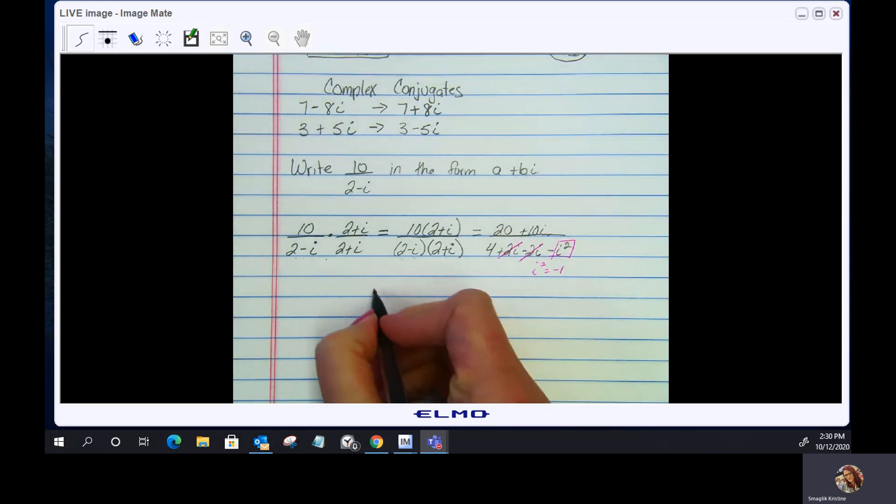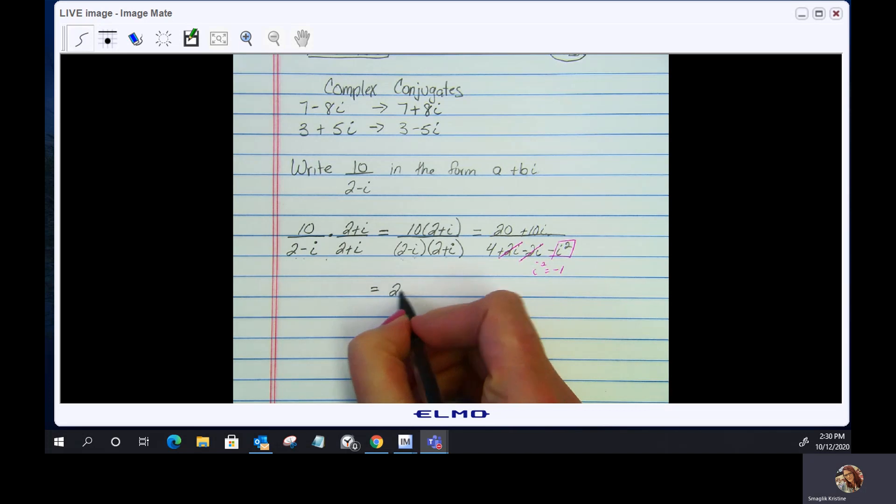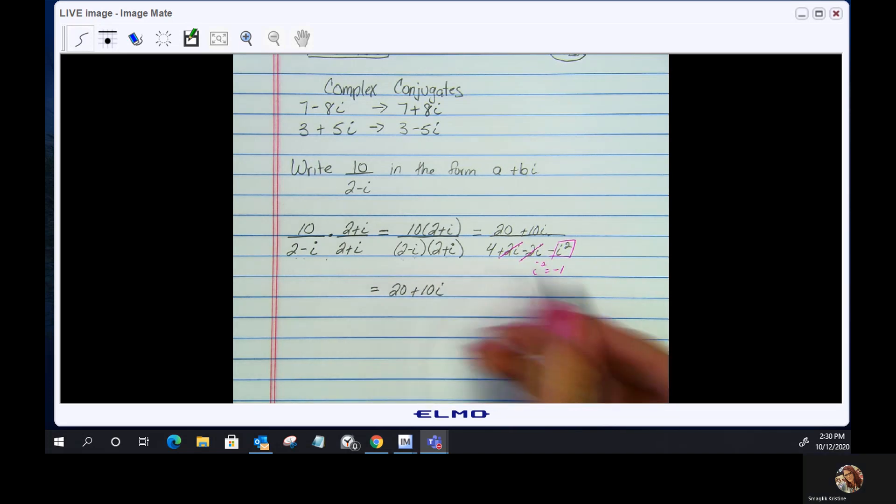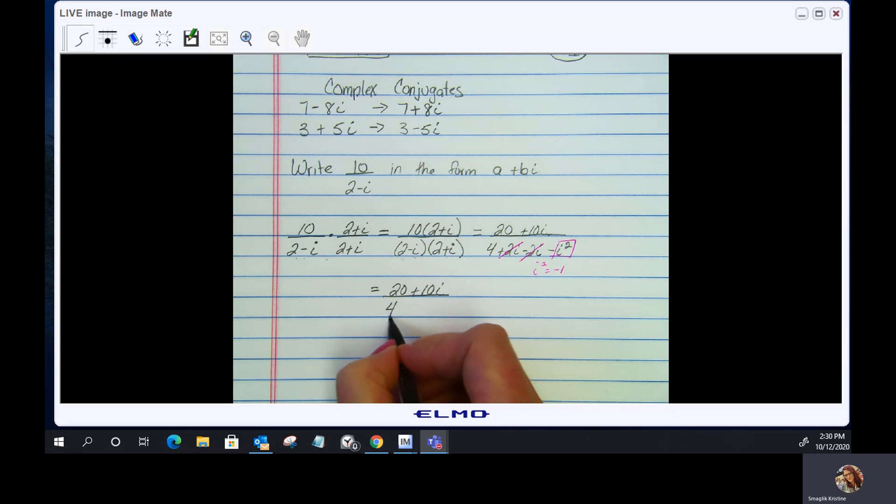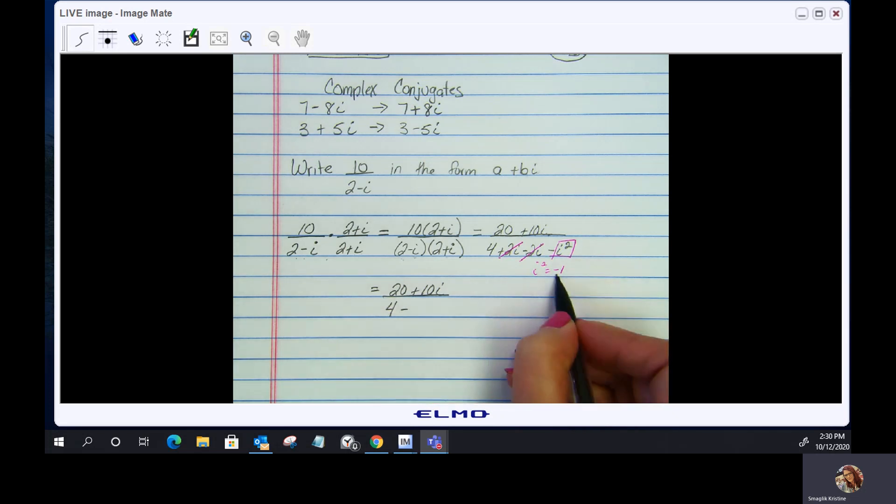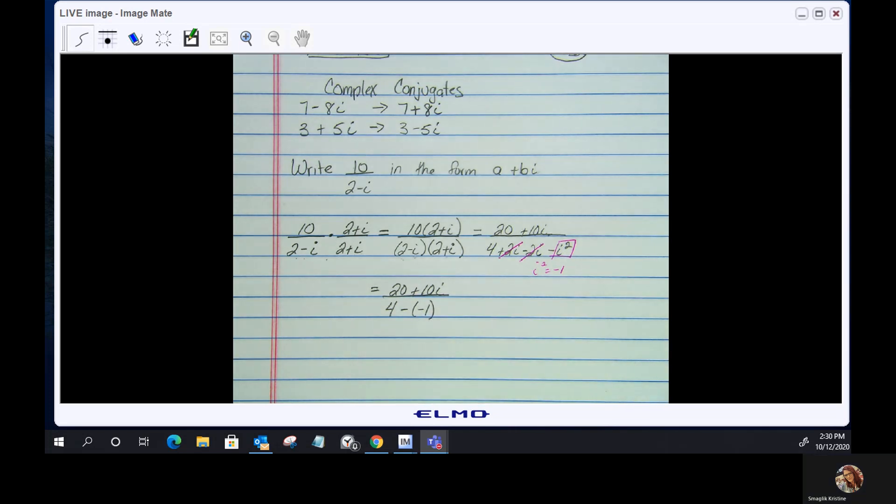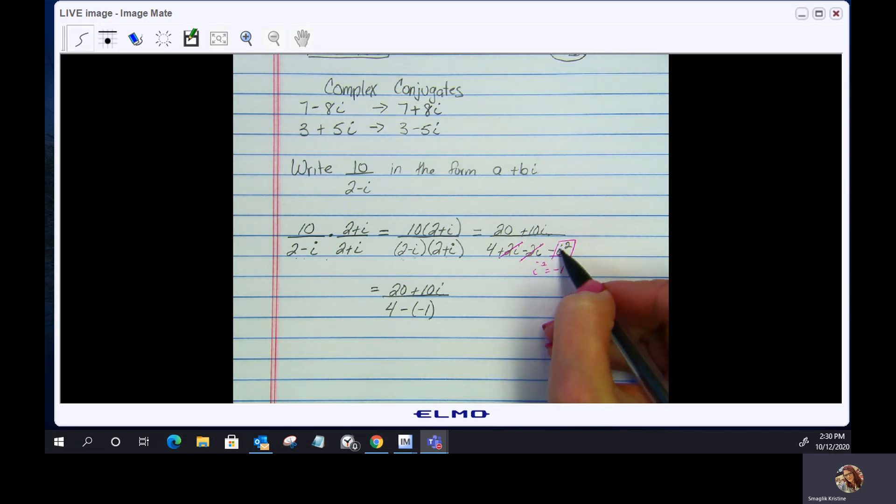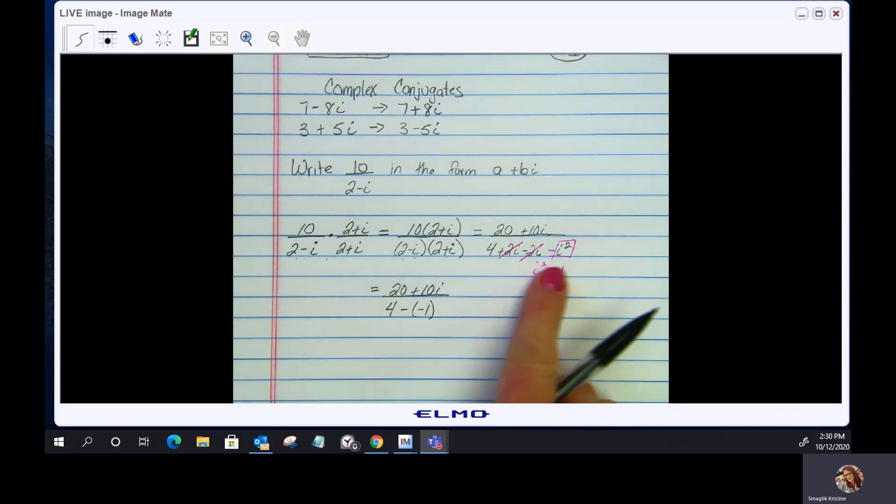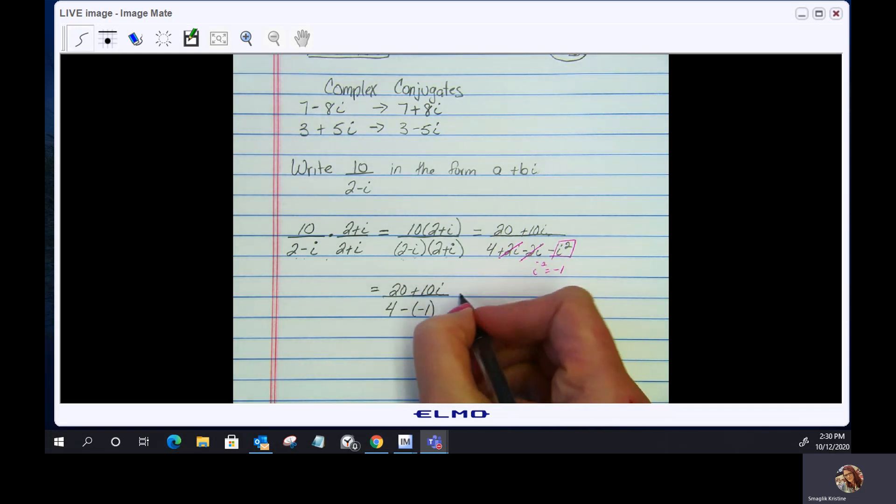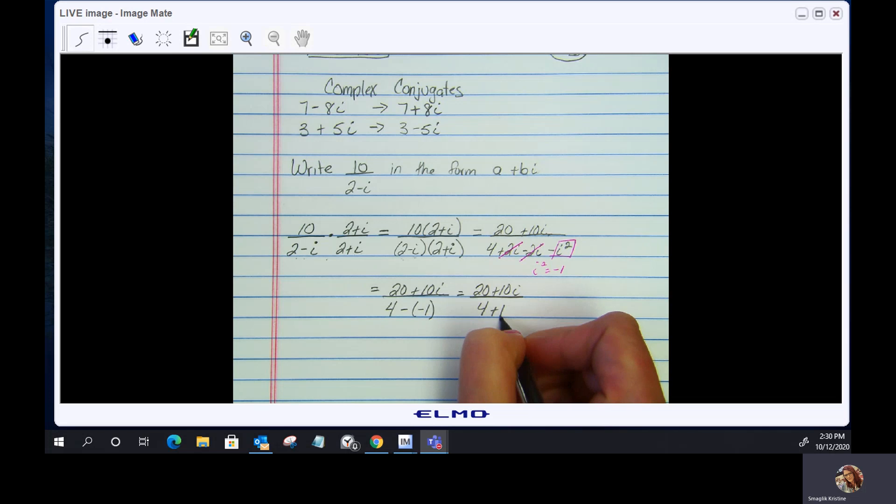I can't do anything with the numerator yet, so I'm keeping it as 20 plus 10i all over 4 minus i squared. And i squared is negative 1. Remember that i squared just flips the sign. The coefficient of i squared here is 1, so this turns into a positive 1. I get 20 plus 10i all over 4 plus 1.